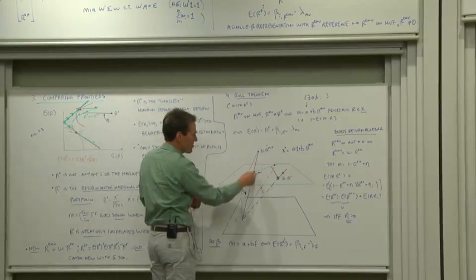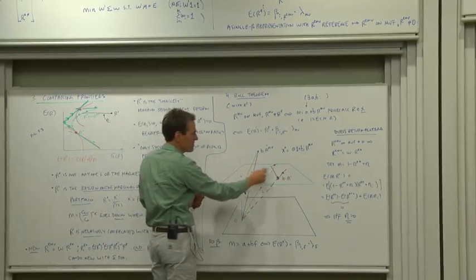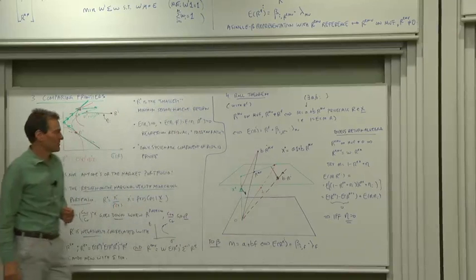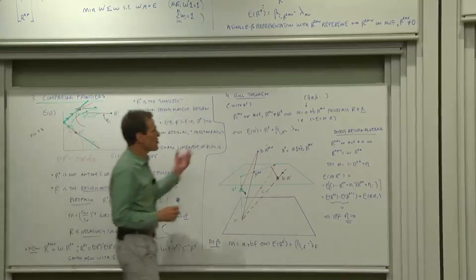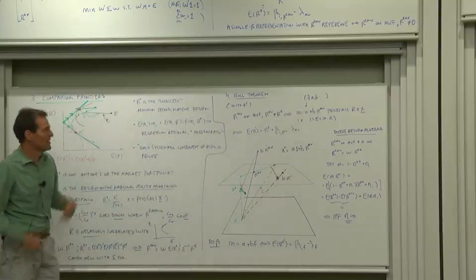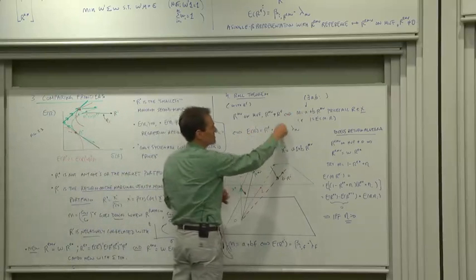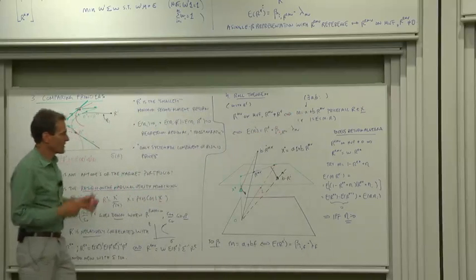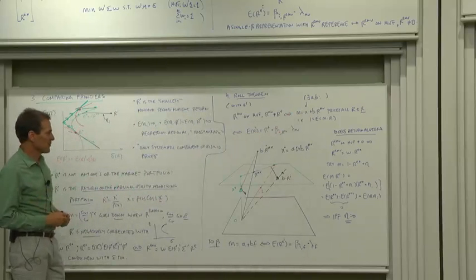I can get back to X star by linear transformations if I start on the frontier, but I can't if I'm not on the frontier, meaning I can construct a discount factor from a mean variance efficient portfolio, meaning then I can express expected returns as a linear factor pricing model using that portfolio.